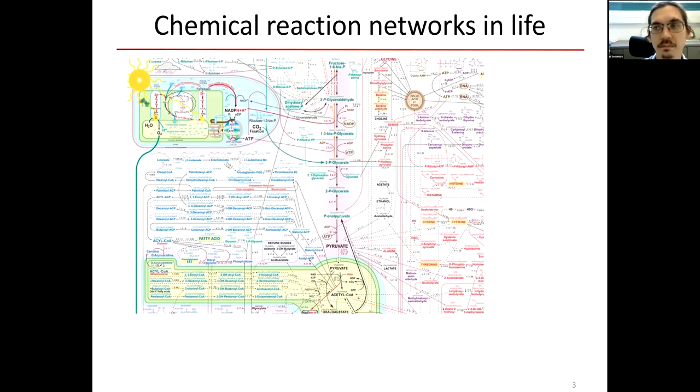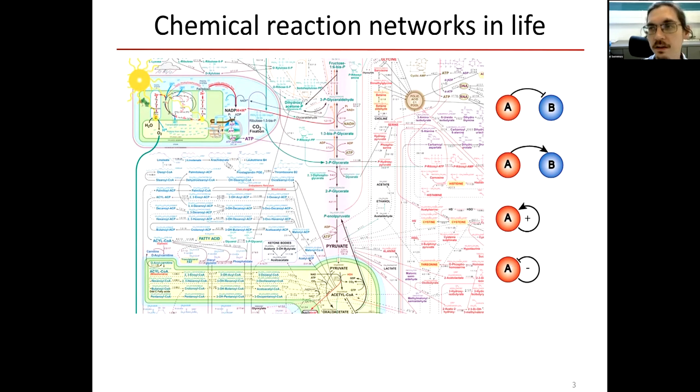But luckily this network consists of functional motifs, such as bistable switches or oscillatory motifs. And these motifs essentially consist of most simple building blocks, such as one reaction suppressing another reaction, one reaction accelerating another reaction. And if this acceleration or suppression comes back to reaction itself, then we can talk about positive and negative feedback loops, which are key ideas to work with reaction networks.